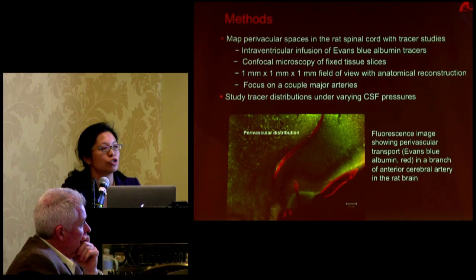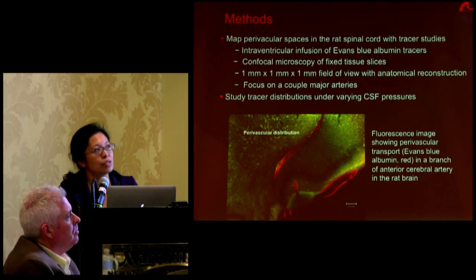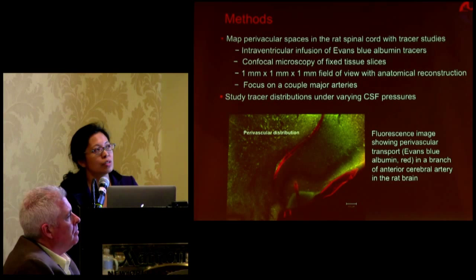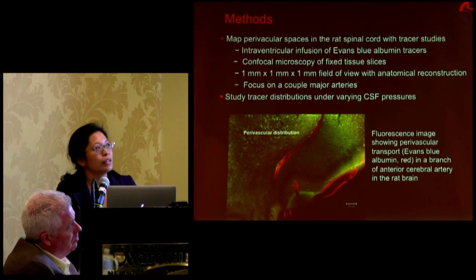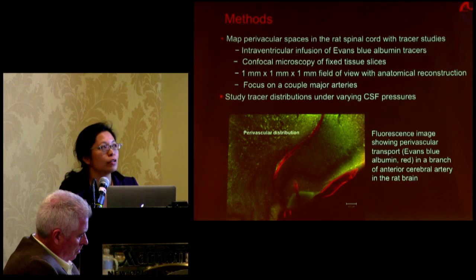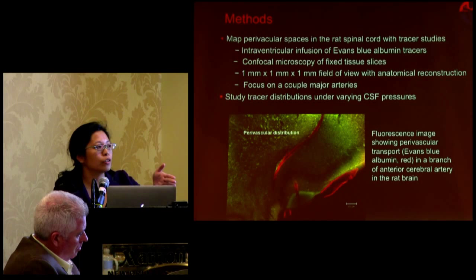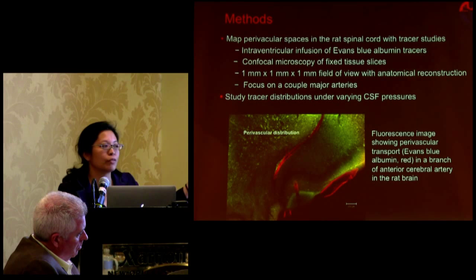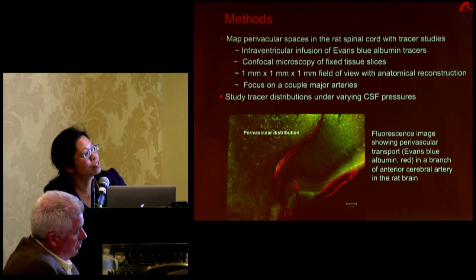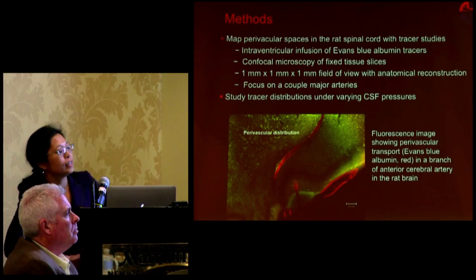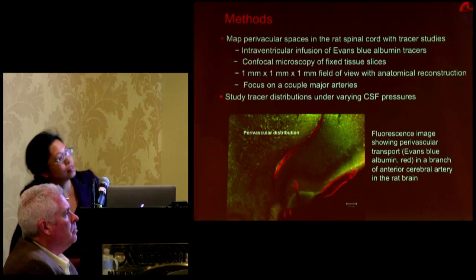Our preliminary data seems to show that. So we've injected and then we're working with fixed tissues, looking at them with confocal microscopy and then trying to recreate these 3D geometries. We're just going to look at a small field of view — something like a millimeter by millimeter by millimeter — reconstructed around one of the major arteries. That picture is just some preliminary data we have generated looking at Evans blue, and the Evans blue fluoresces red. So what you're seeing there is the red along the anterior cerebral artery — you can just kind of see that with the green fluorescent background.